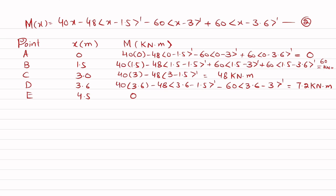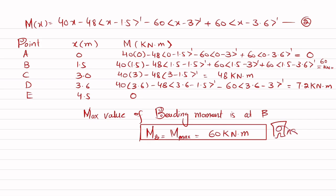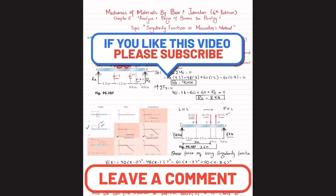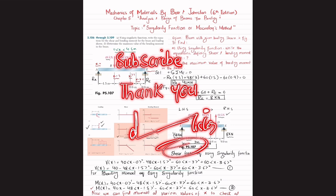From the table we conclude that the maximum value of bending moment occurs at point B, where M_B equals 60 kilonewton-meters. This is the answer to problem 5.107. I hope you enjoyed this video and learned from it. If you are new to the channel, please subscribe and press the bell icon for notifications. Any questions can be asked in the comment section — thank you for watching.